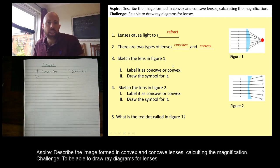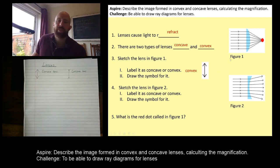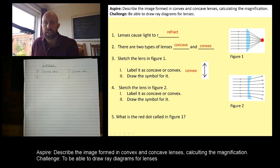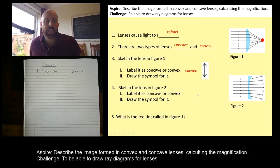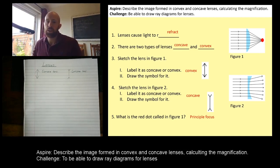There are two types of lenses — concave and convex, either way around is fine. Sketch the lens in figure one: you should have drawn this in your book and labeled it as a convex lens, because it's converging the light, along with that symbol. Sketch the lens in figure two: you should have drawn and labeled it as a concave lens with its symbol. And the challenge: that dot is called the principal focus, all the way from slide number two.